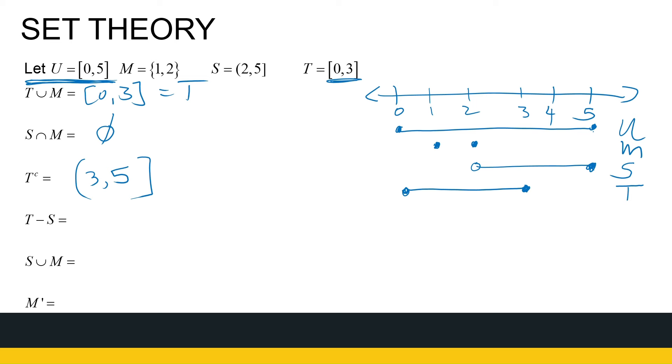All right. T without S. Take T. Take S away. So I'm taking away what they have in common. T without S. If I take S away from T, I'm left with everything from 0 all the way to 2. Am I left with 2? Well, 2 is in T. It's not in S. So I didn't take it away. So I am left with it.